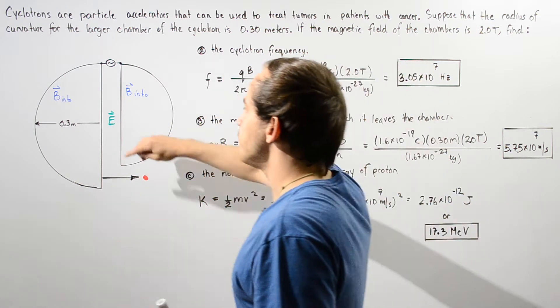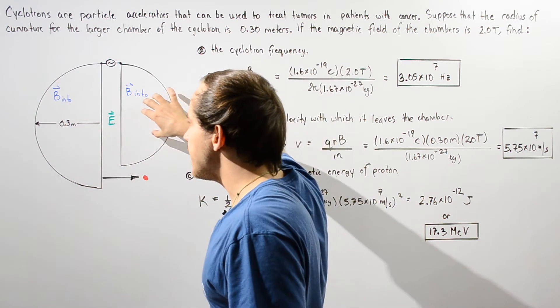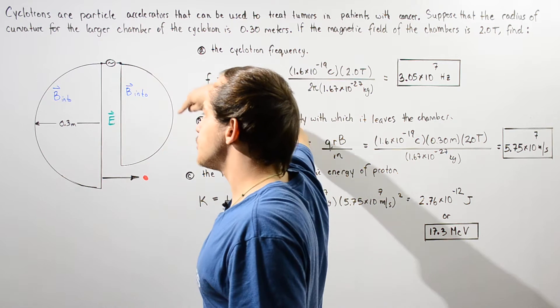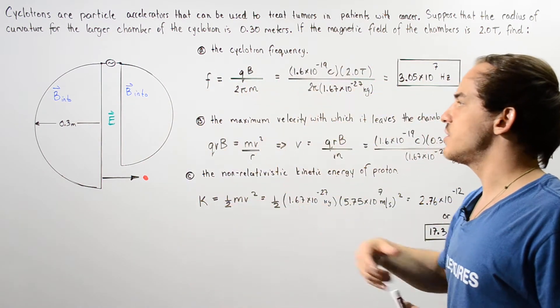Now when the proton moves inside these chambers, it moves in a circular fashion as a result of the magnetic field that acts on that proton.